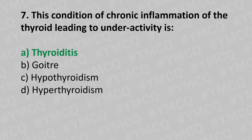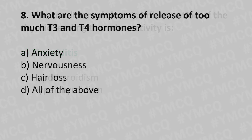Now let's move to question number eight. What are the symptoms of release of too much T3 and T4 hormone? Option A - anxiety, option B - nervousness, option C - hair loss, option D - all of the above. The answer is option D - all of the above.